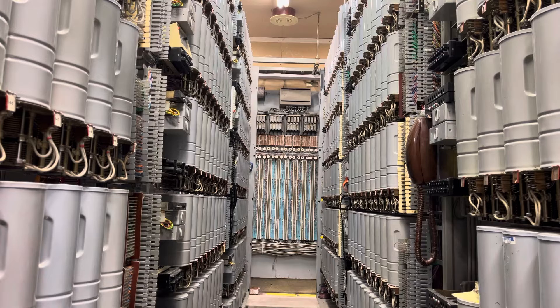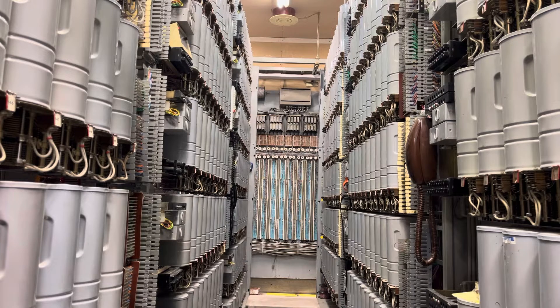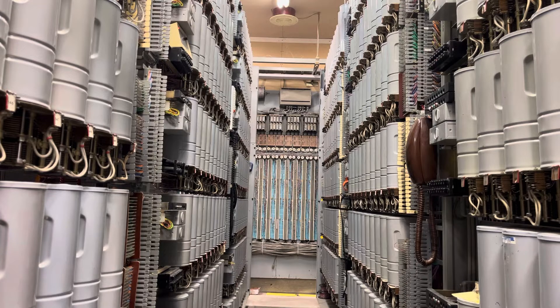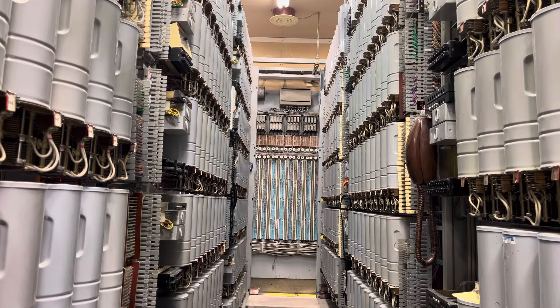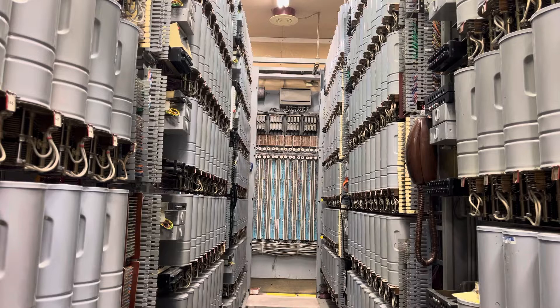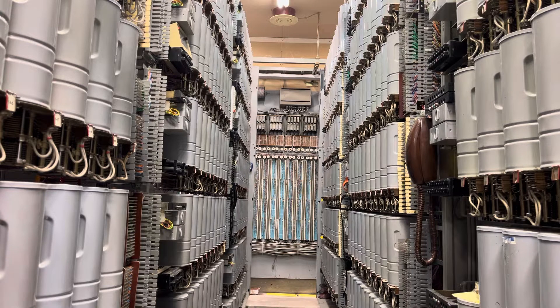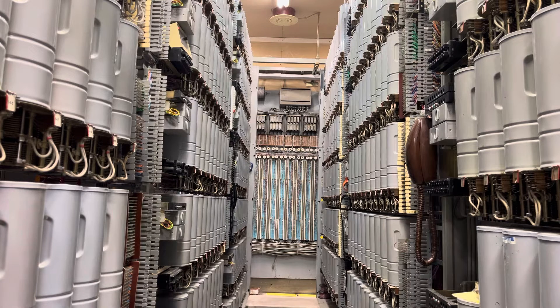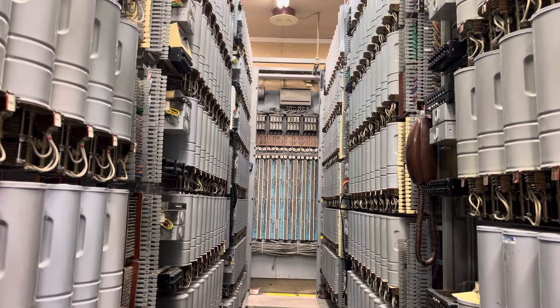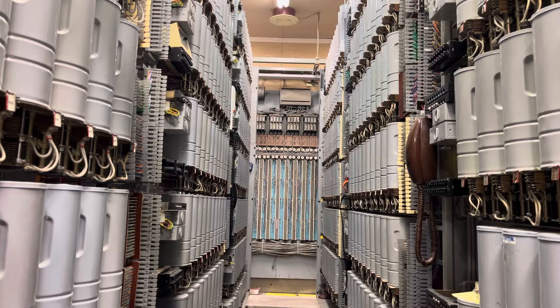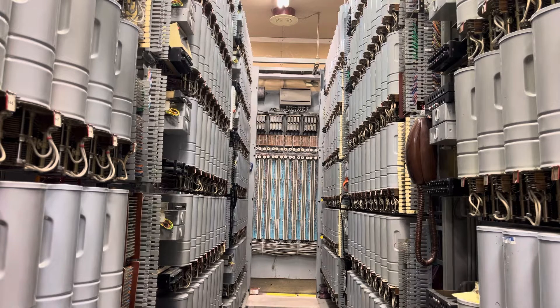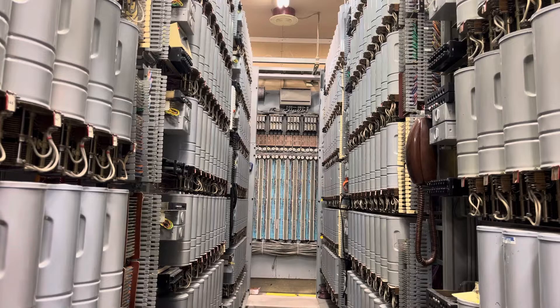They could have had a dead level trunk that appeared on a cord board switchboard depending on the size of the city, or a machine would then answer the line and tell you the number was disconnected. Later in the 70s and 80s they had automatic intercept in some exchanges that would tell you the changed number if it had been changed.